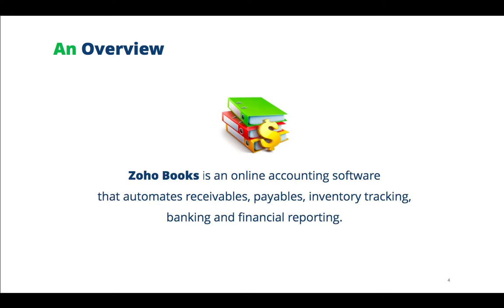A very brief overview of Zoho Books and what it does: it's an online accounting software that completely automates the money that goes in and goes out of your business — that's your receivables and payables. And if there's any stock that you need to keep track of, your inventory tracking, you can easily do that. If there's a bank account that you would like to link to your accounting software, you can do that within Zoho Books. And finally, we have a very powerful reports module within Zoho Books, with about 50-plus insightful reports that you can generate quite easily.